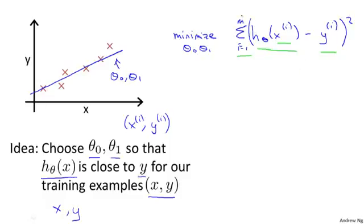And just to remind you of notation, m here was the size of my training set. So the little m there is my number of training examples. That hash sign is the abbreviation for number of training examples.